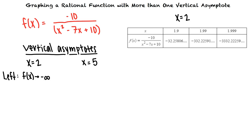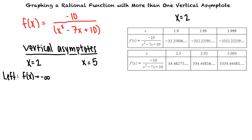Now we need to evaluate f of x for some values of x greater than 2 but getting close to 2. We see that as x approaches 2 from the right, f of x increases without bound. This means that f of x approaches infinity as x approaches 2 from the right.